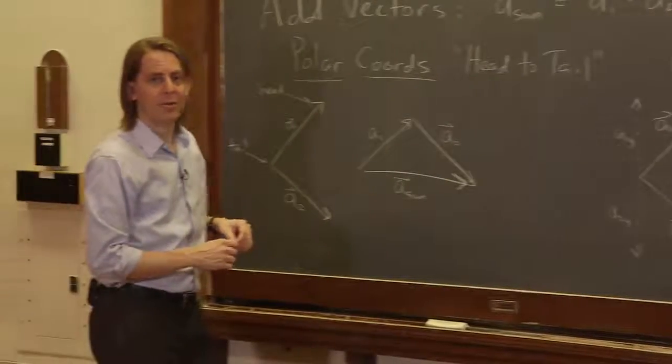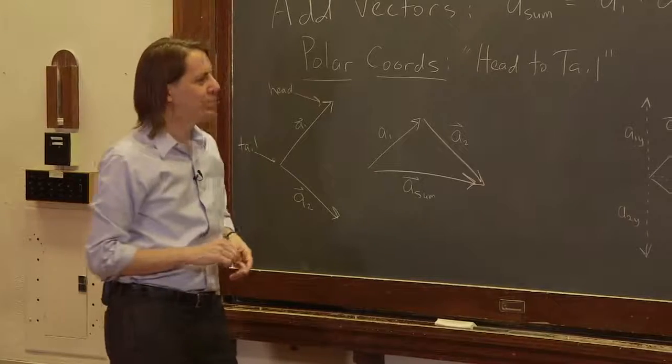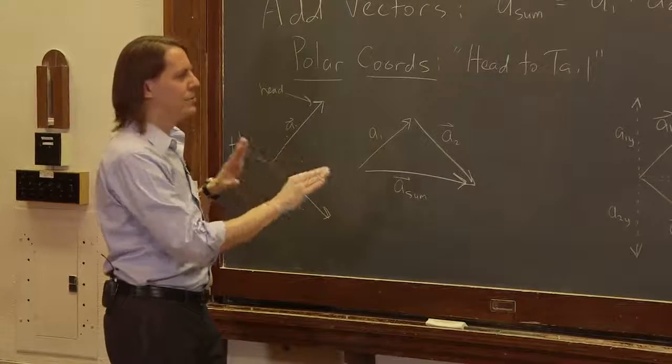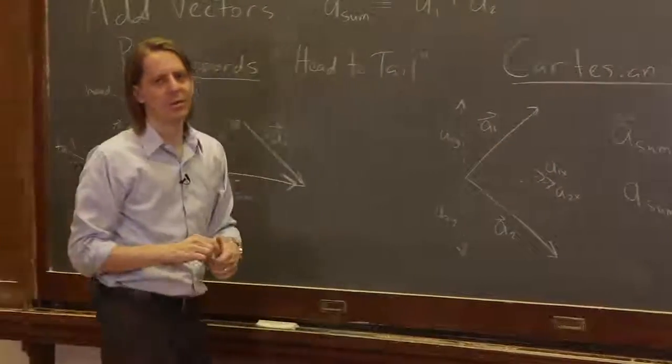So the two really are giving about the same, well, they're giving exactly the same thing to within the precision of my drawing. But anyway, that's how you add vectors. You can do it either way. Usually when you're getting a mathematical answer, you've got to break it into Cartesian components.